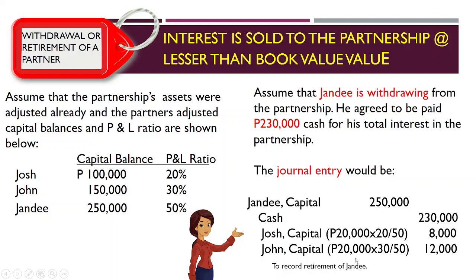The $20,000 difference is computed as follows: for Josh — $20,000 × (20/50) = $8,000; for Chan — $20,000 × (30/50) = $12,000. This entry records the retirement of Jandy, who received lesser than his capital credit.